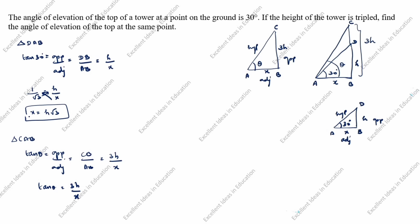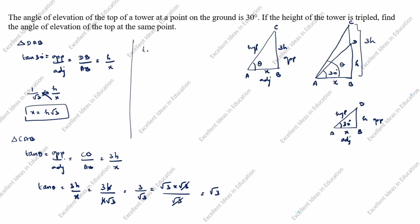We already calculated x equals h√3, so we substitute: tan θ equals 3h over h√3. The h cancels, leaving 3 over √3. Writing 3 as √3 × √3, we get √3 × √3 over √3. The √3 cancels, so tan θ equals √3.